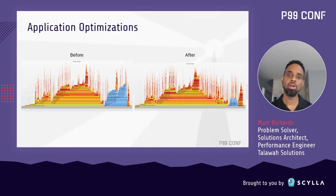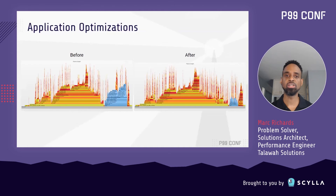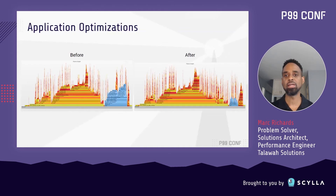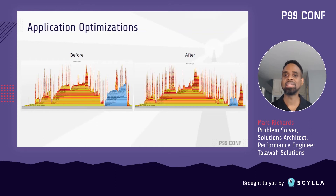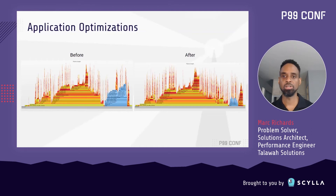Looking at the before and after flame graphs, the most obvious change is the reduction in width and height of the frames representing the userland code. The horizontal reduction indicates less time spent on CPU, and the vertical reduction represents more aggressive function inlining courtesy of the compiler.